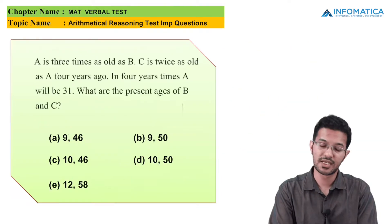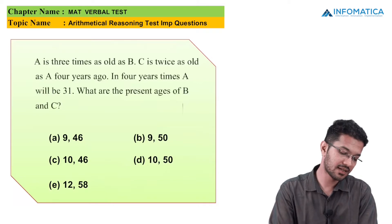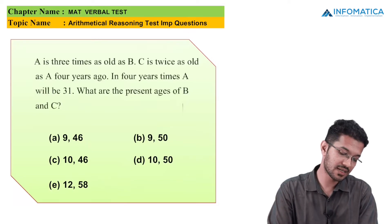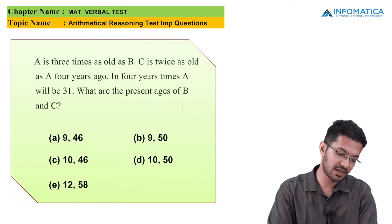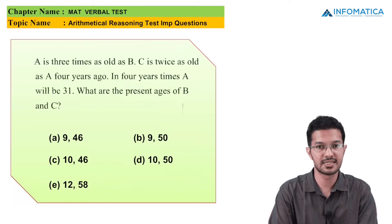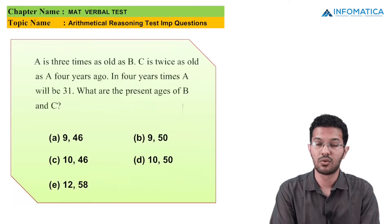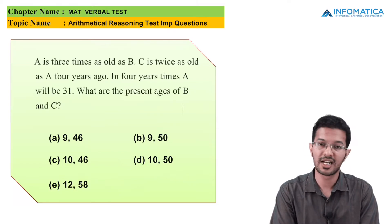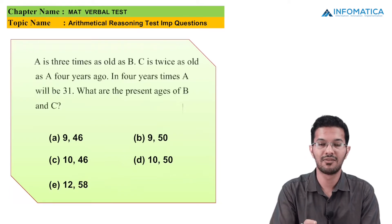For the next question: A is 3 times as old as B; C is twice as old as A, 4 years ago; and in 4 years' time A will be 31. We need to find the present ages of B and C. From the first condition, A = 3B.